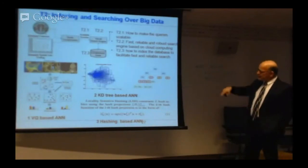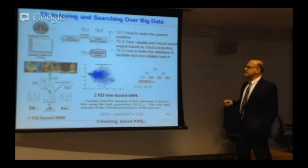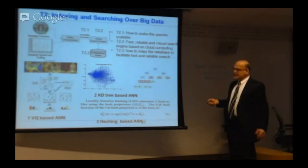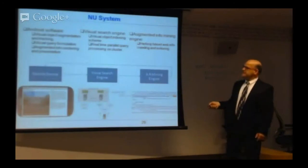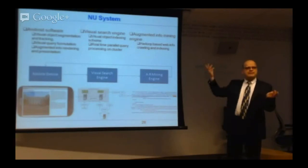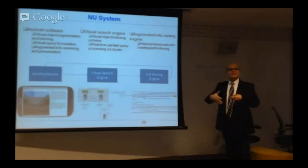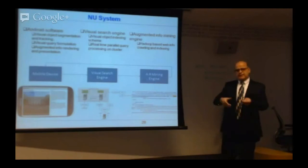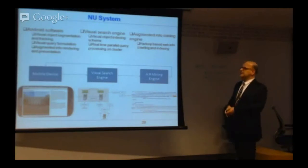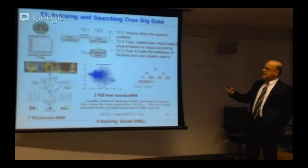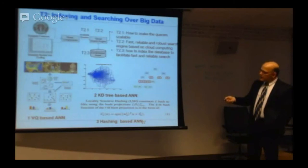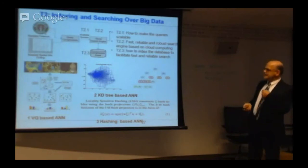We're also working with large data — millions of still images — trying to build a system whereby you walk around with your cell phone and see a building you don't recognize, snap a picture, it's sent to a central server, and you get back information about that building. You could do the same with CD covers or book covers. The challenges are how to extract robust and compact features, how to index the huge database, and how to perform efficient retrieval of the data.